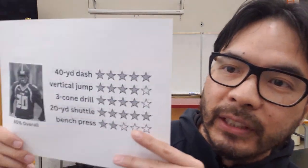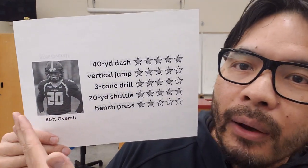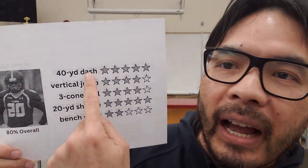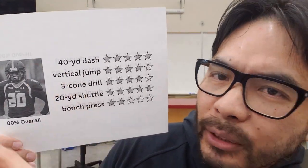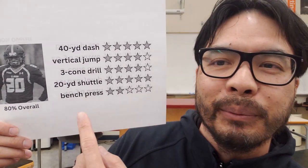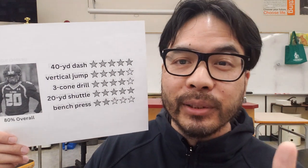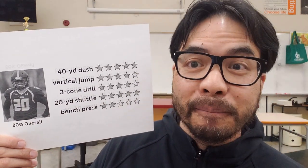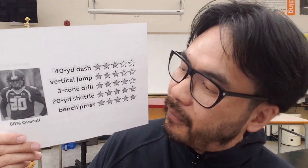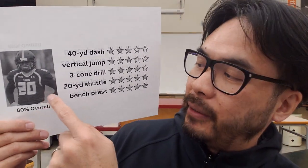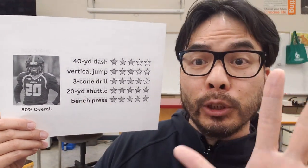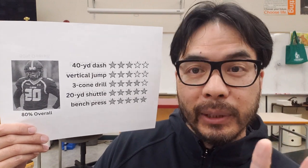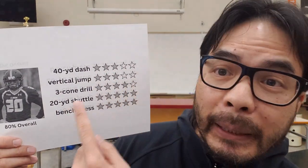For example, if this player is a wide receiver, they might get five stars in sprinting and in jumping, but not so much on bench press, because they're not pushing back on players all the time — wide receivers are running and jumping. On the other hand, if this player is a lineman, then they might get five stars on bench press because they're pushing back on people all the time, but less on speed.